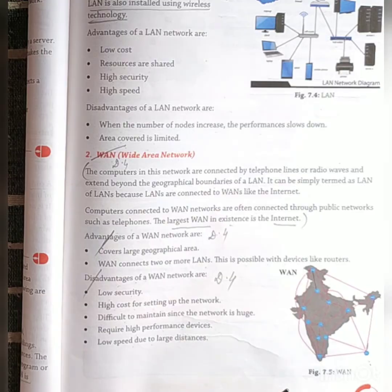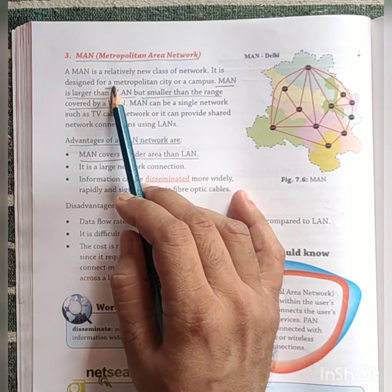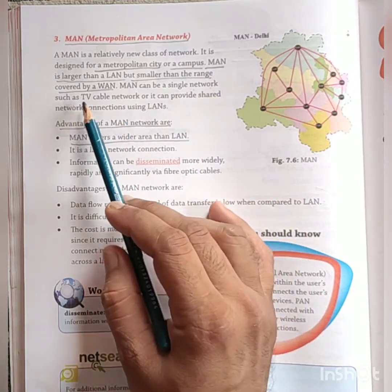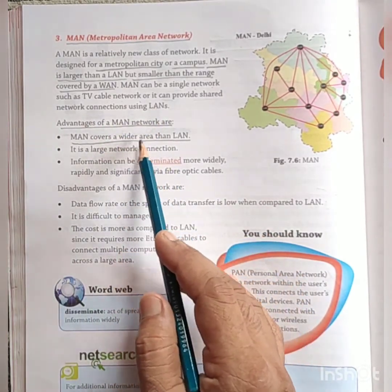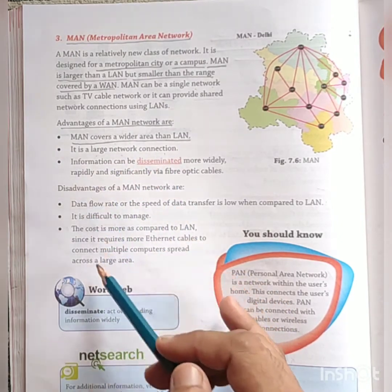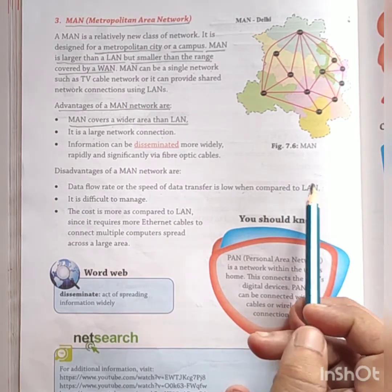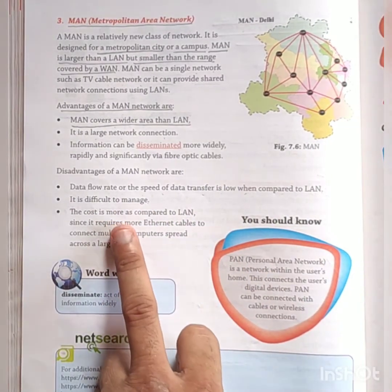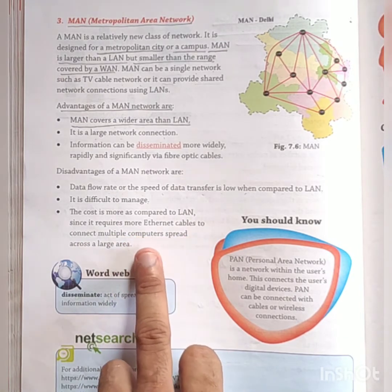Lastly, we have MAN — Metropolitan Area Network. Metropolitan area network is designed for a metropolitan city or campus. MAN can be a single network such as a TV cable network, or it can provide shared network connections using LAN. Advantages: MAN covers a wider area range than LAN; it is a large network connection.